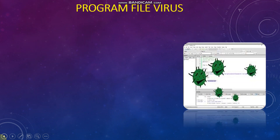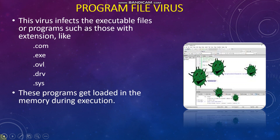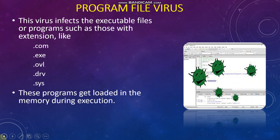Program file virus: This virus infects the executable files or programs, such as those with extensions like .COM, .EXE, .OVL, .DRV, and .SYS. These programs get loaded in the memory during execution. The virus becomes active in the memory by replicating itself and infecting files on the disk.